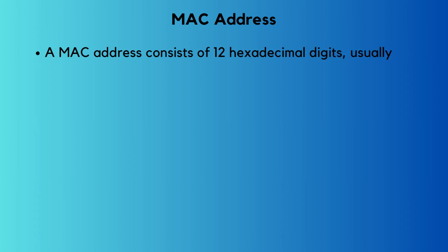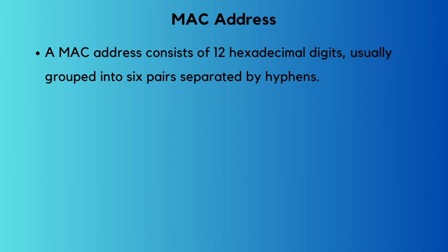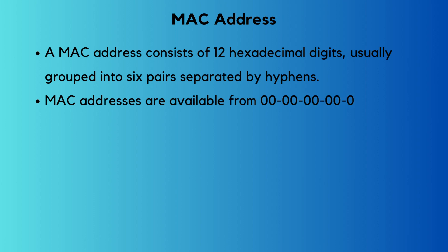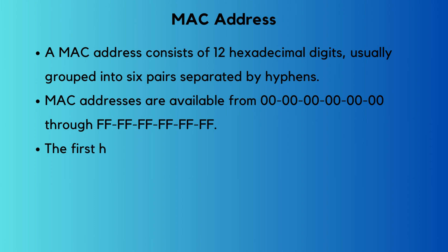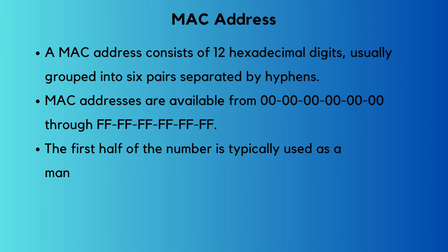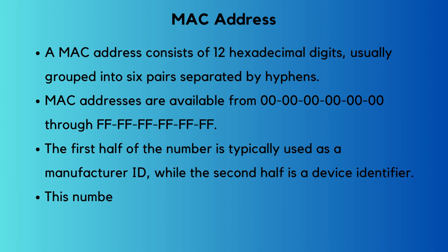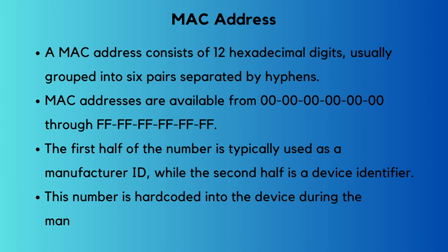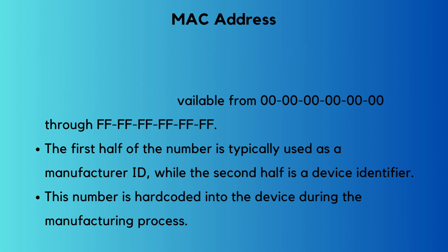MAC addresses are always a 12-digit hexadecimal number with digits separated every two characters by a colon or hyphen, and MAC address values range from 0 through F. The first half of the number is typically used as a manufacturer ID and the second half is a device identifier. Nearly all enterprise network devices today — whether Wi-Fi or Ethernet — have this number hard-coded in the device during the manufacturing process.